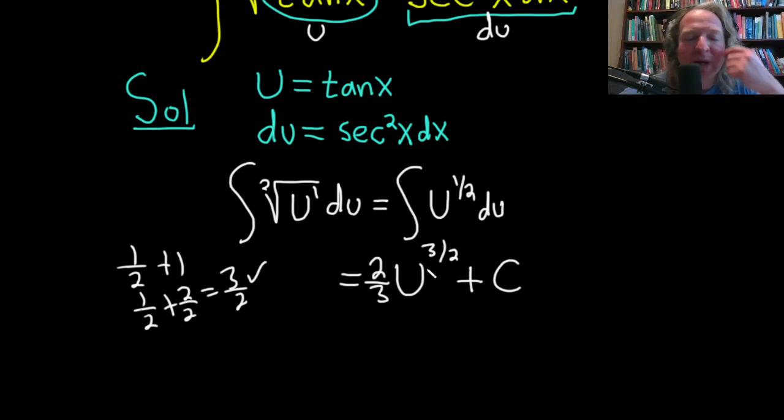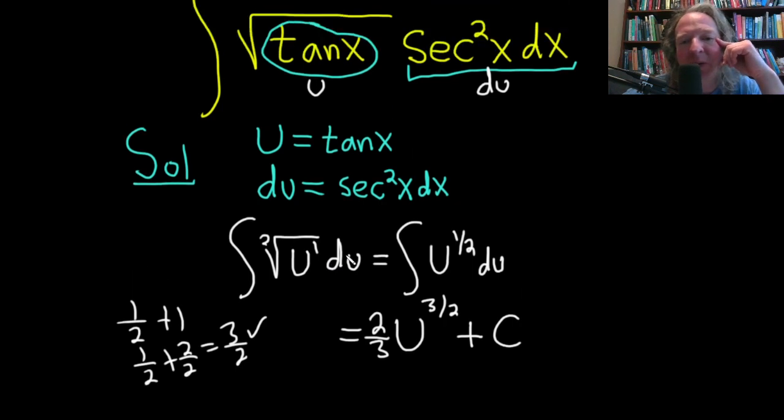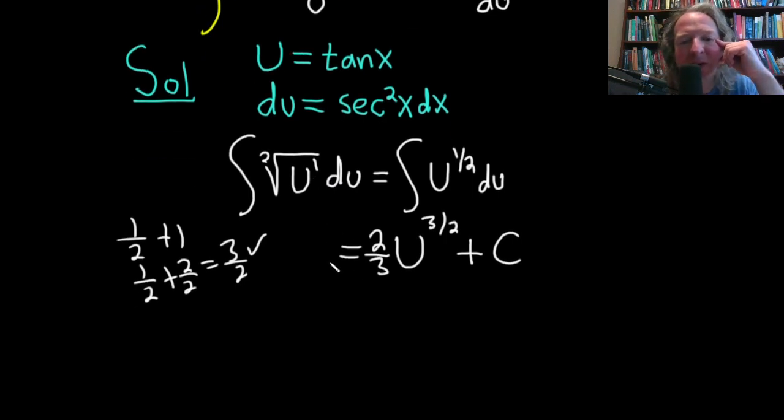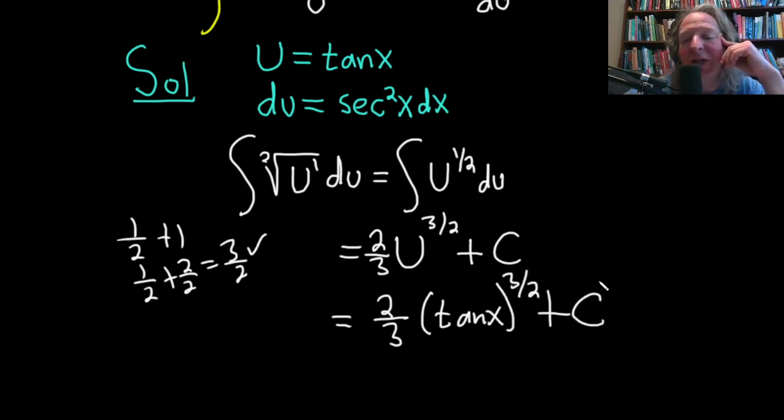Almost done, we have to go back to our original variable which was x. So this is equal to two thirds tangent of x to the three halves plus C.